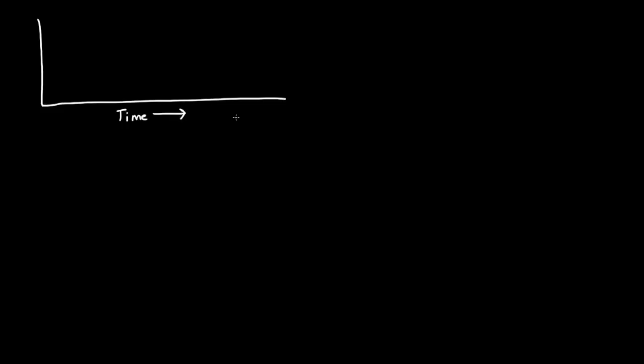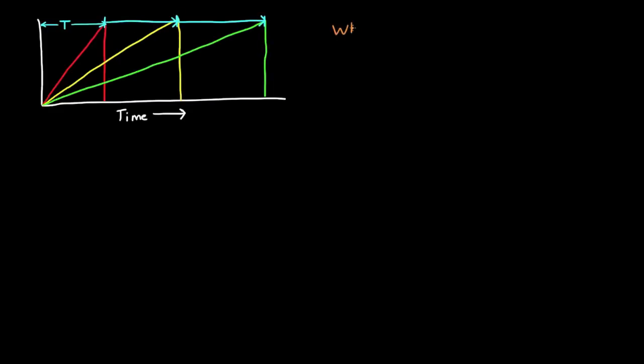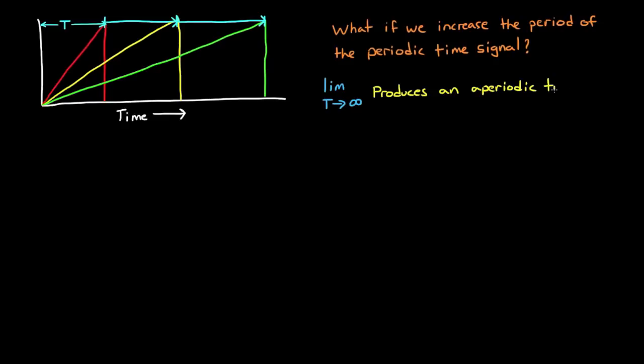We started with a periodic time function, and we used the Fourier series to represent the signal in the frequency domain. But what happens if we increase the period of the periodic function? Then the fundamental frequency gets smaller and smaller, and each harmonic of that fundamental frequency also gets smaller in proportion. Then if you take the limit as t approaches infinity, the result will be an aperiodic function. This is a function that has a period of infinite time. And when you take the limit as t approaches infinity in the Fourier series, you arrive at the Fourier transform pairs.